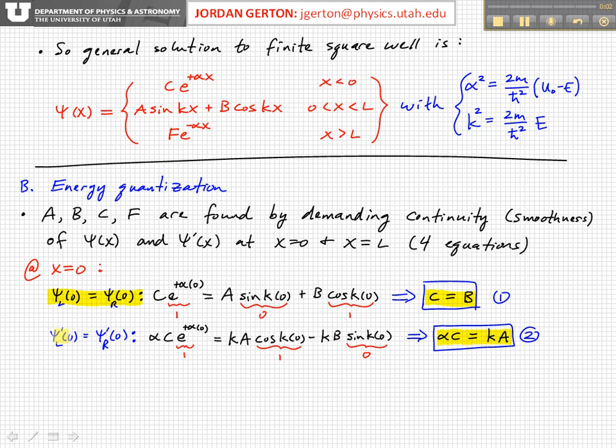Okay, so again, if you take the derivative of the left-hand side function, c e to the plus alpha x, and the derivative of the right-hand side function, which in this case is this, and you set them equal to each other. So the derivative of an exponential is just that exponential right back plus the derivative of the argument, alpha, and we're evaluating this at x equals 0.